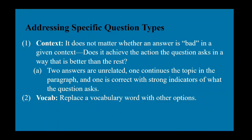Typically there are two answer choices that are unrelated, one that continues the topic but doesn't best answer the question, and one that directly responds to the prompt with strong indicators of what the question asks. The other question type is vocabulary — replace the vocabulary word with the other options and see which one makes the most sense using context clues and your knowledge of prefixes and suffixes.